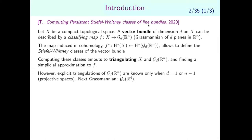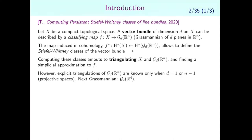Say you have a topological space X and a vector bundle on it. A vector bundle on a compact topological space can be described by a classifying map — a map that goes from X to the Grassmannian. The Grassmannian is a manifold depending on two parameters, d and n. Given such a map f, you can consider the induced map in cohomology from the cohomology of the Grassmannian to the cohomology of X. Particular cohomology classes pushed forward by f* give cohomology classes of X called Stiefel-Whitney classes, which are topological invariants of vector bundles.